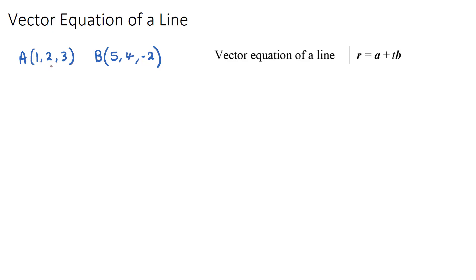So I've given you two coordinates, and these are just coordinates on a three-dimensional plane, where coordinate A is at point 1, 2, 3, and coordinate B is 5, 4, negative 2. Now, what we're going to do is find the vector equation of a line that passes through both of these two points.